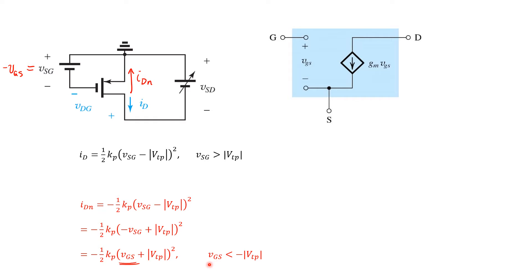Now, a key point is that this square law is valid only when VSG exceeds the absolute value of the threshold voltage of the PMOS transistor. So since we've rewritten this bottom expression in terms of VGS, the condition is flipped around. So VGS has to be less than negative that threshold voltage. And the nice thing about this expression here is that we're defining everything in terms of variables IDN and VGS that have the same polarity as the small signal model on the right.